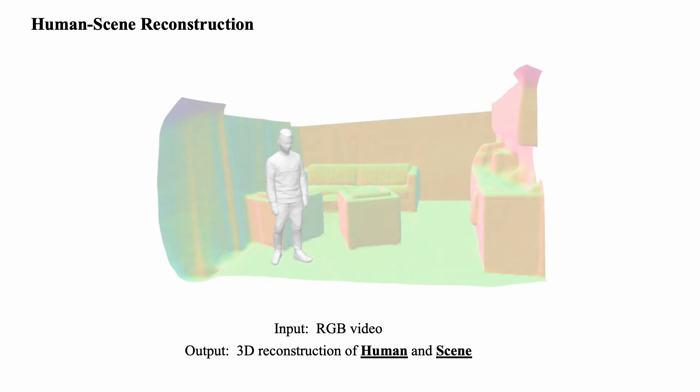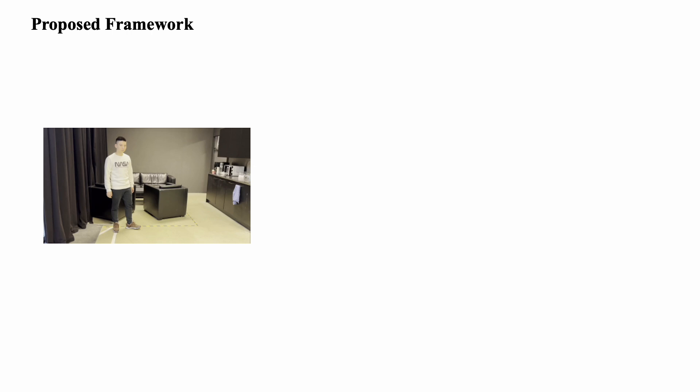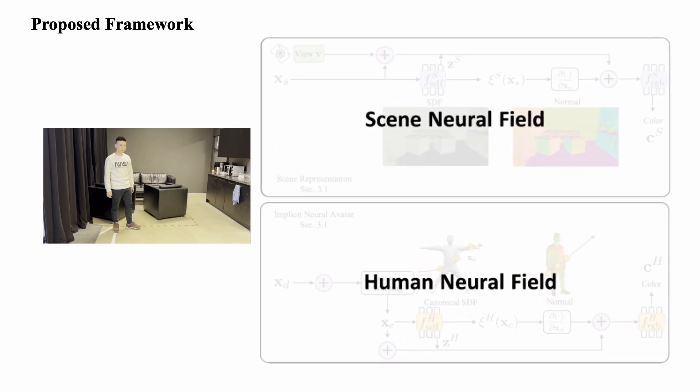Importantly, the reconstruction is temporally and spatially coherent. This is achieved by jointly modeling and optimizing both the dynamic human and the static environment. Specifically, our framework integrates two neural fields to jointly model the dynamic human body and the background scene in 3D space.